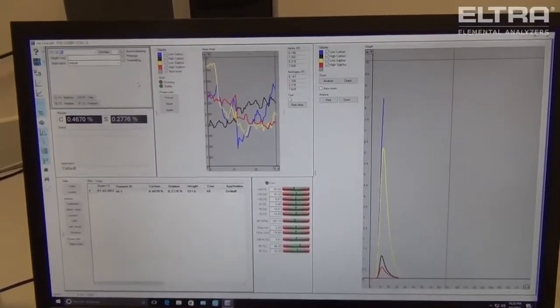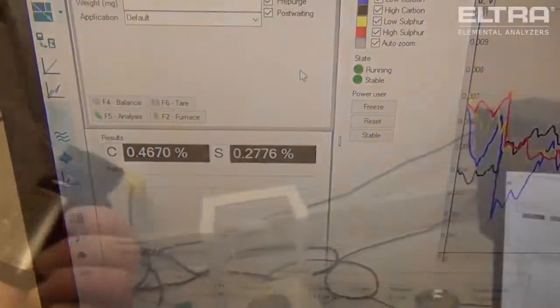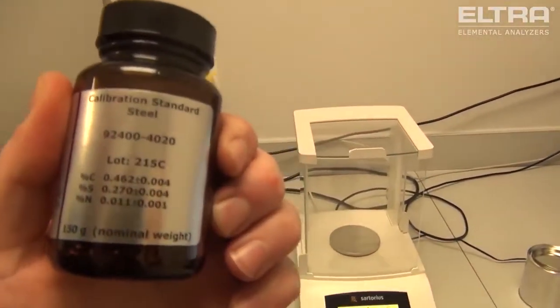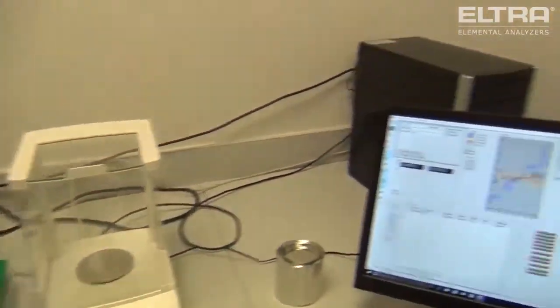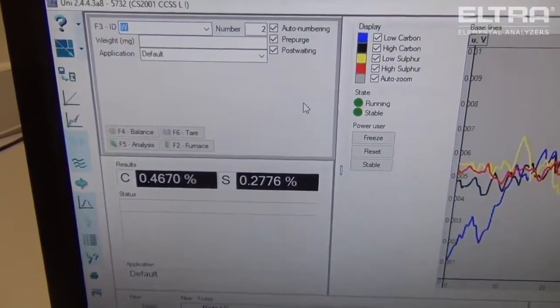Right here on the results screen, you can get the exact percentages in your sample. We were looking for 0.46, and we got 0.46. For sulfur, we were looking for 0.27, and we acquired 0.27%.